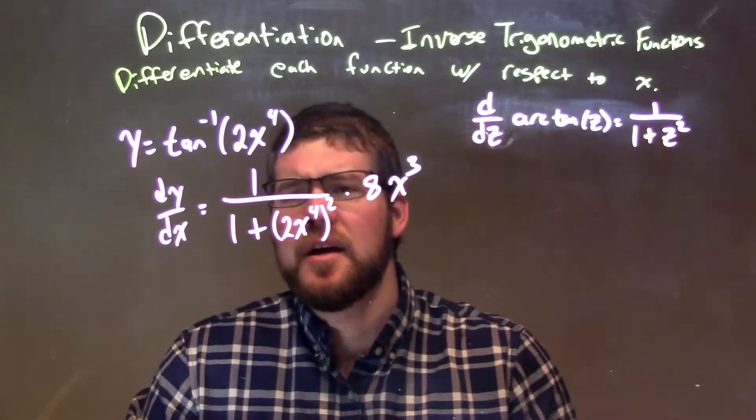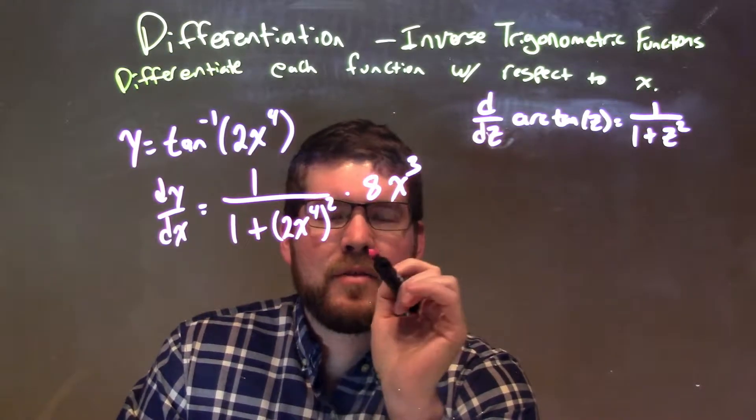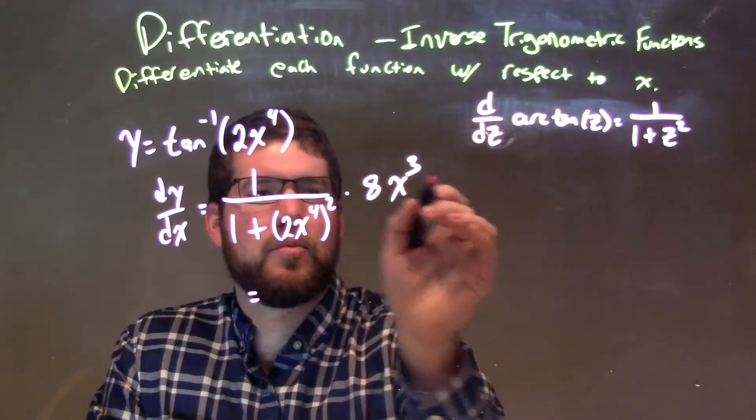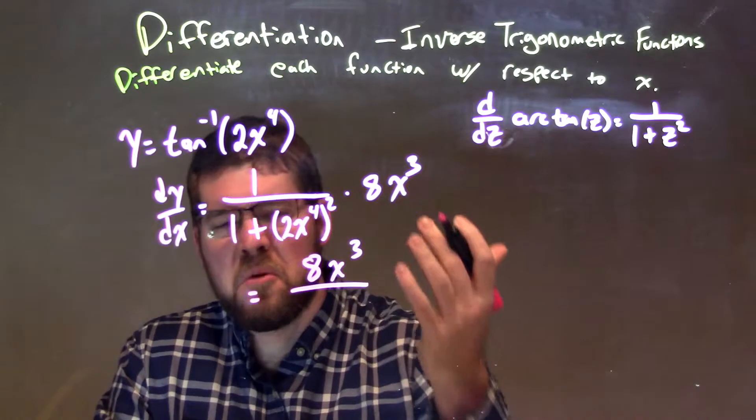So dy/dx equals 1 over 1 plus this 2x to the fourth squared times 8x to the third. Let's just simplify this a little bit here. We have 8x to the third on top, 8x to the third multiplied by 1.